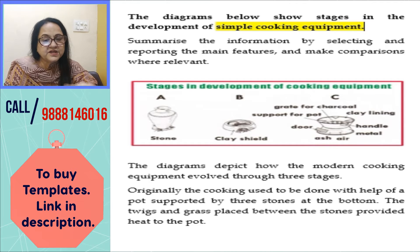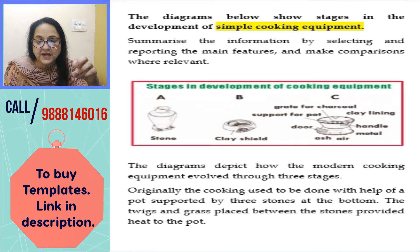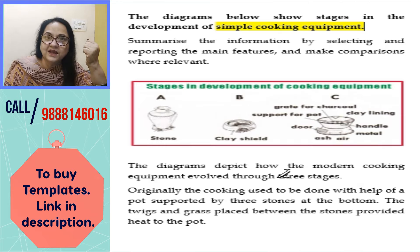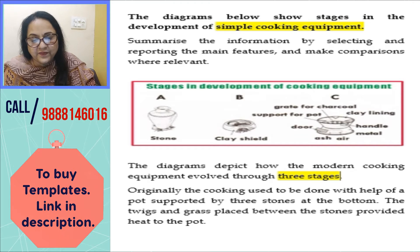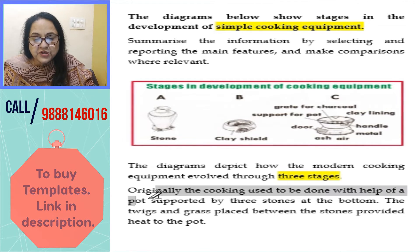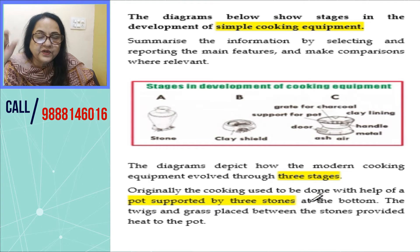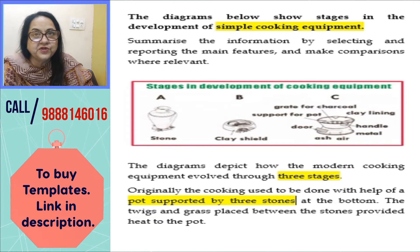Stage 1: there is a stone, a pot, and clay, and cooking used to be done in that. The diagram depicts how modern cooking equipment evolved through three stages. This is the first line. Originally, cooking used to be done with the help of a pot supported by three stones at the bottom. The pot is the first stage — we will explain it in two to three lines.